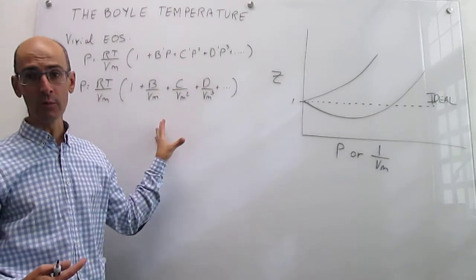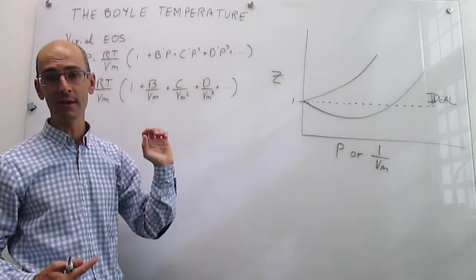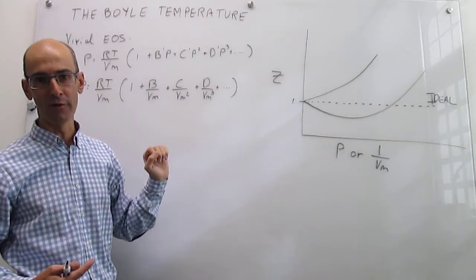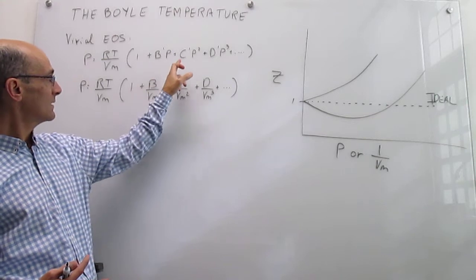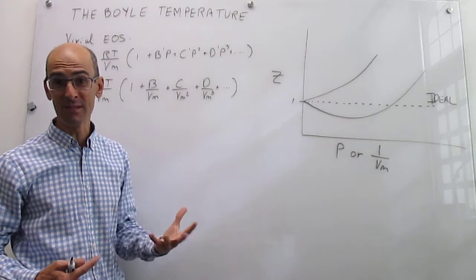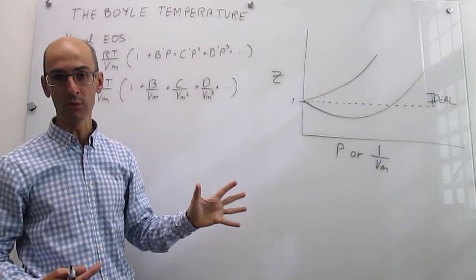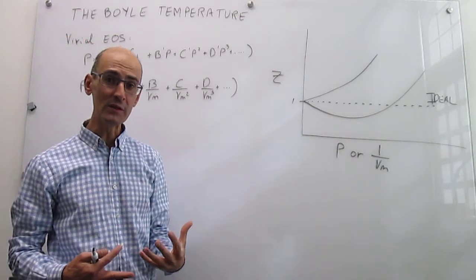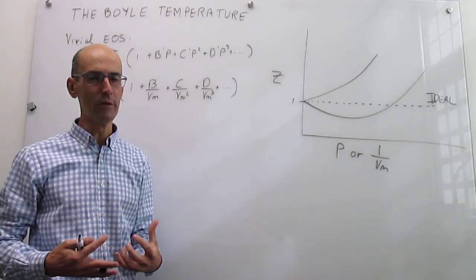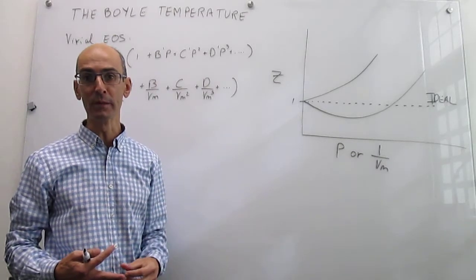This is how the virial equations of state look like for real gases, where here we have the version expanded on pressure and here is the version expanded on inverse of molar volume. Those B', B, C', C, D', D are the virial coefficients of the virial expansion, and they are not the same but they are related to each other. In this video we learn the meaning of those virial coefficients and whether they have a physical meaning that can help us understand real gases a little bit better.